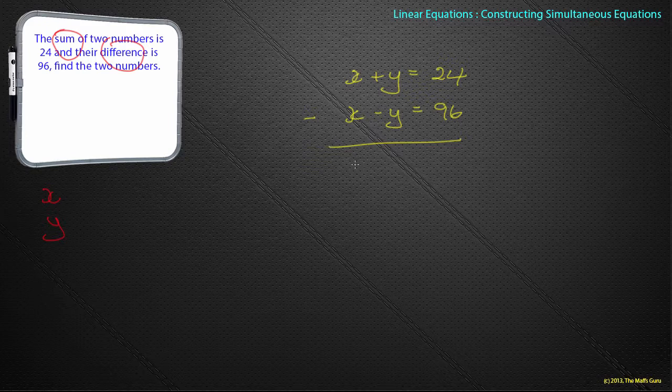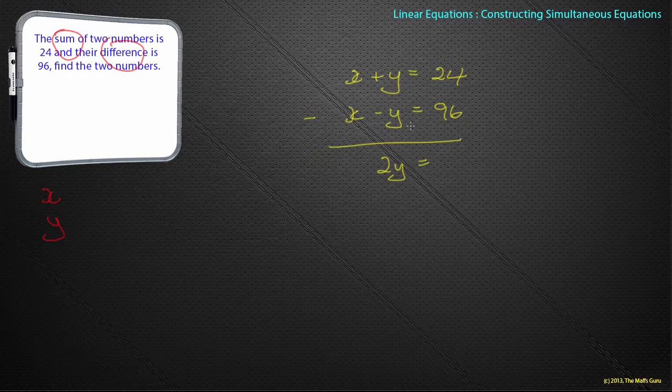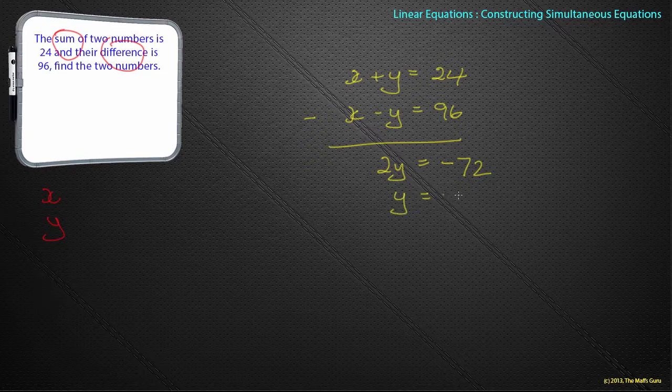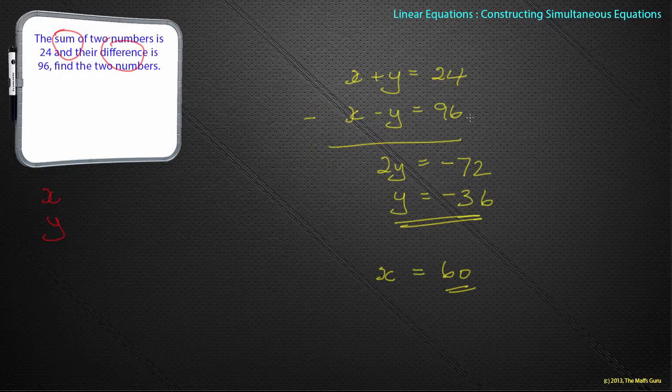So x minus x disappears, and for completeness, I won't put anything there. And y minus minus y becomes 2y. And 24 minus 96, what is 24 minus 96? Minus 72, which leaves y to be equal to minus 36. There's my y value, and then we can go on, and we find that actually when we substitute back in, we get x is equal to 60.